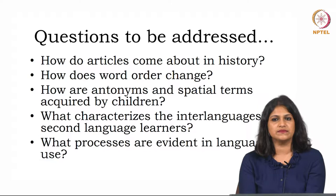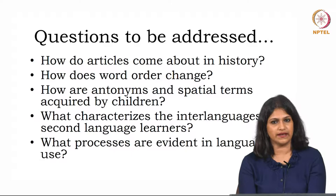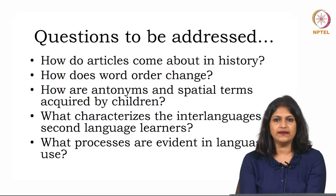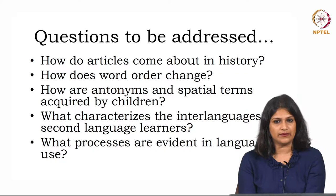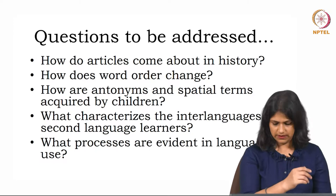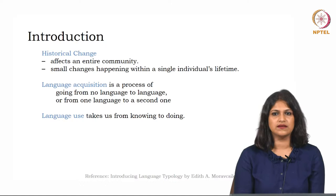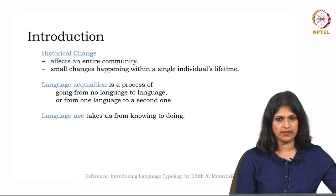The third question is: how are antonyms and spatial terms acquired by children? This is an acquisition-based question. The fourth question is: what characterizes the interlanguages of second language learners? Again, an acquisition-based question. And finally: what processes are involved in language use? These are questions discussed in Moravcsik's book and will serve as indicative discussion points, and we will try to find some potential answers.